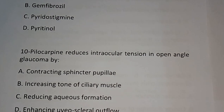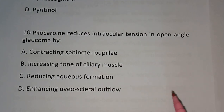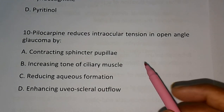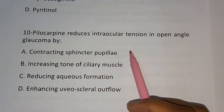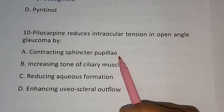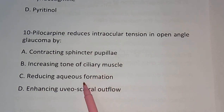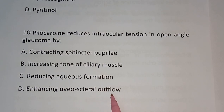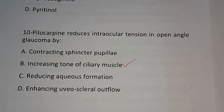Question number ten: Pilocarpine reduces intraocular tension in open-angle glaucoma by — (A) contracting sphincter pupillae, (B) increasing tone of ciliary muscle, (C) reducing aqueous formation, (D) enhancing uveoscleral outflow. The correct answer is option B — increasing tone of ciliary muscle.